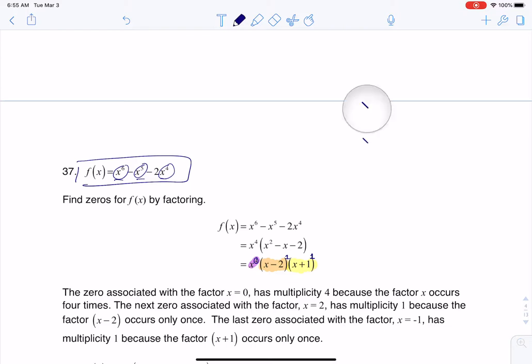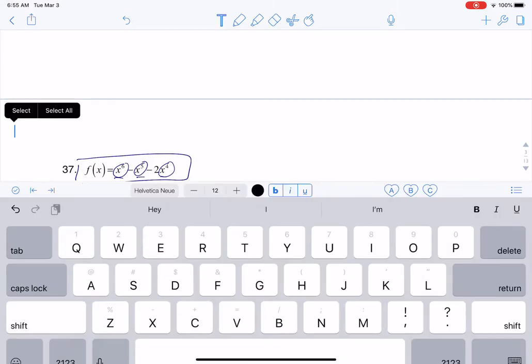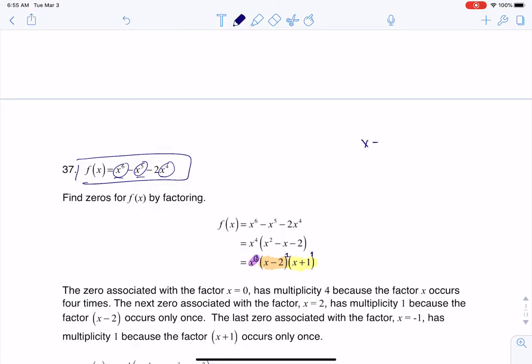the first one would give me x equals 0. Then I would want x minus 2 is equal to 0, and then x plus 1 is equal to 0. So this is already set to go. This gives me a 0 at x equaling 2, this gives me a 0 at x equaling negative 1.